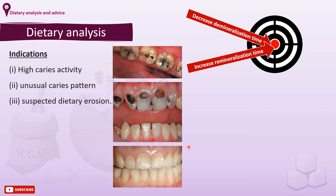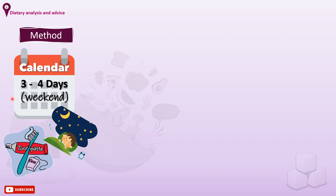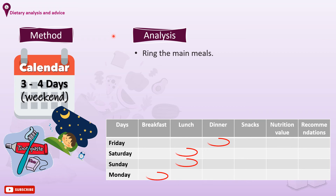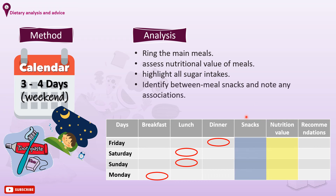Dietary advice should be tailored to the individual, and is most easily done after analysing the patient's present eating pattern. The correct method for dietary analysis is a consecutive 3 or 4 day analysis, including at least one weekend day. Patients record the time, content, and quantity of foods or drinks consumed, and tooth brushing and bedtime should be indicated. When the form is returned, entries should be checked with the patient. Ring the main meals and identify snacks containing complex carbohydrates. Assess the nutritional value of each meal, underline all sugar intakes in any form, identify between-meal snacks, note any associations, and decide on a maximum of three recommendations.